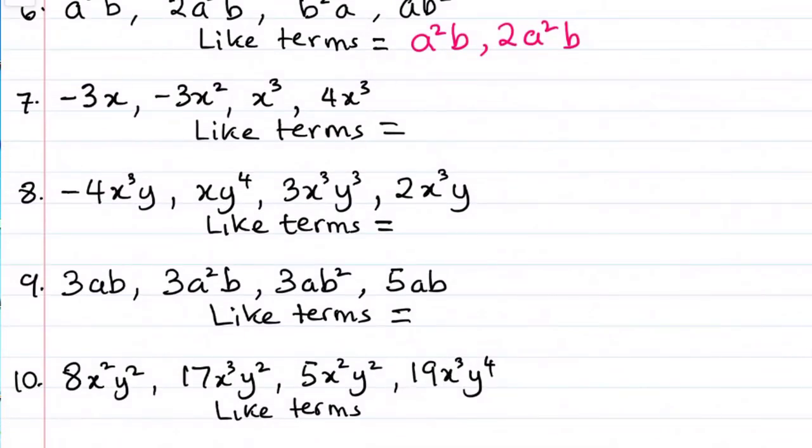And then number 7. We have minus 3x, minus 3x squared, x cubed, and 4x cubed. So if you look through, what is similar within this 4 list?